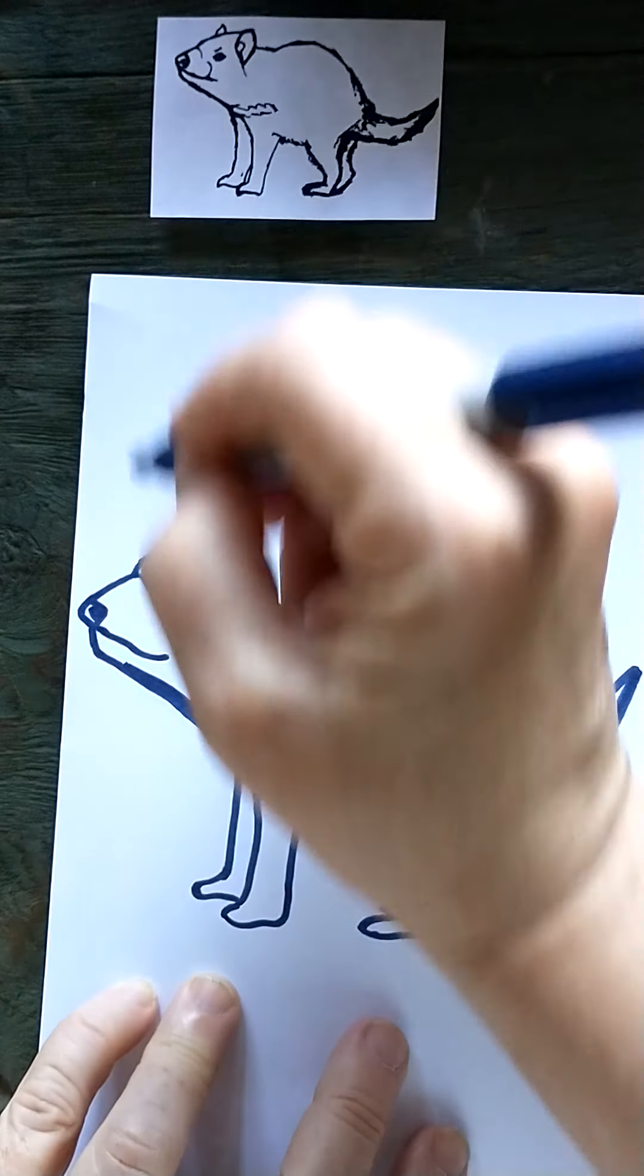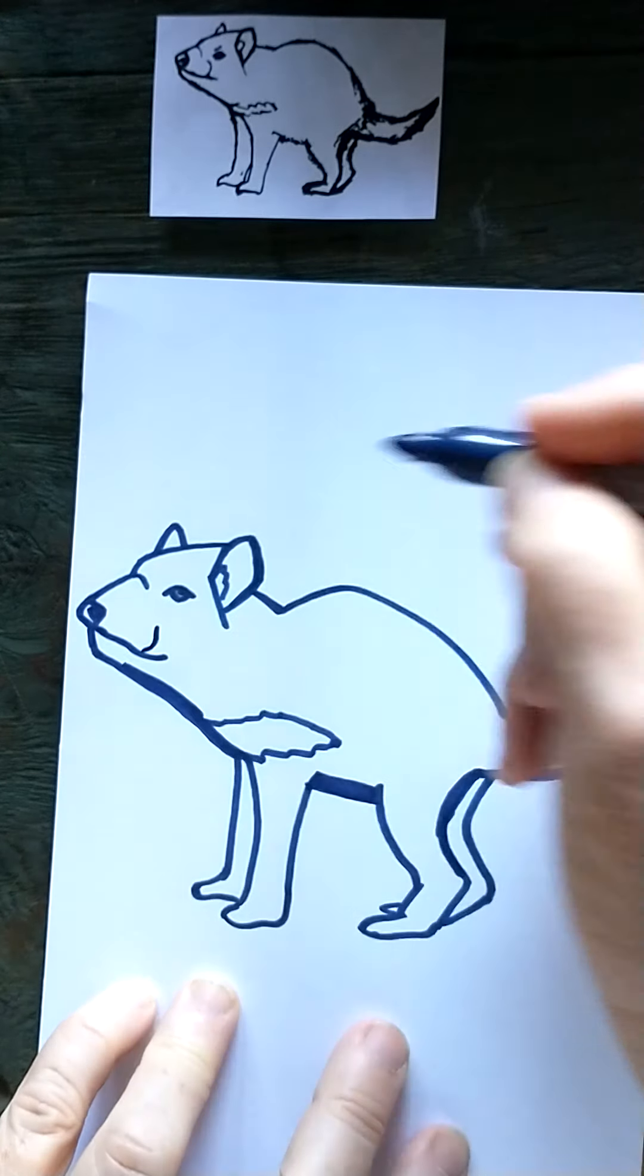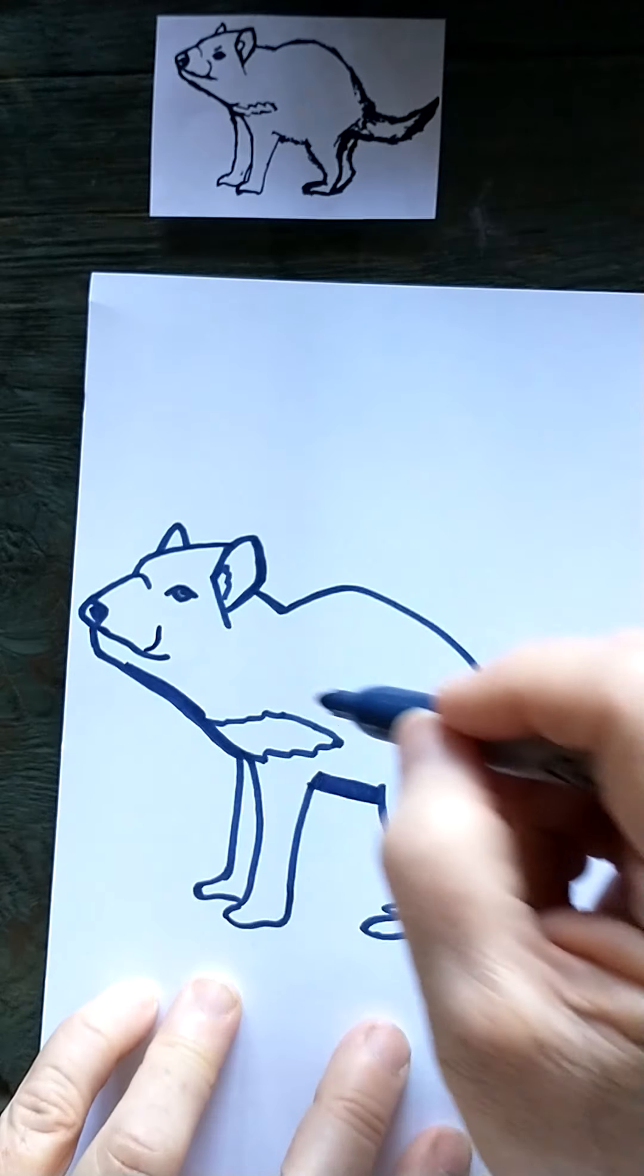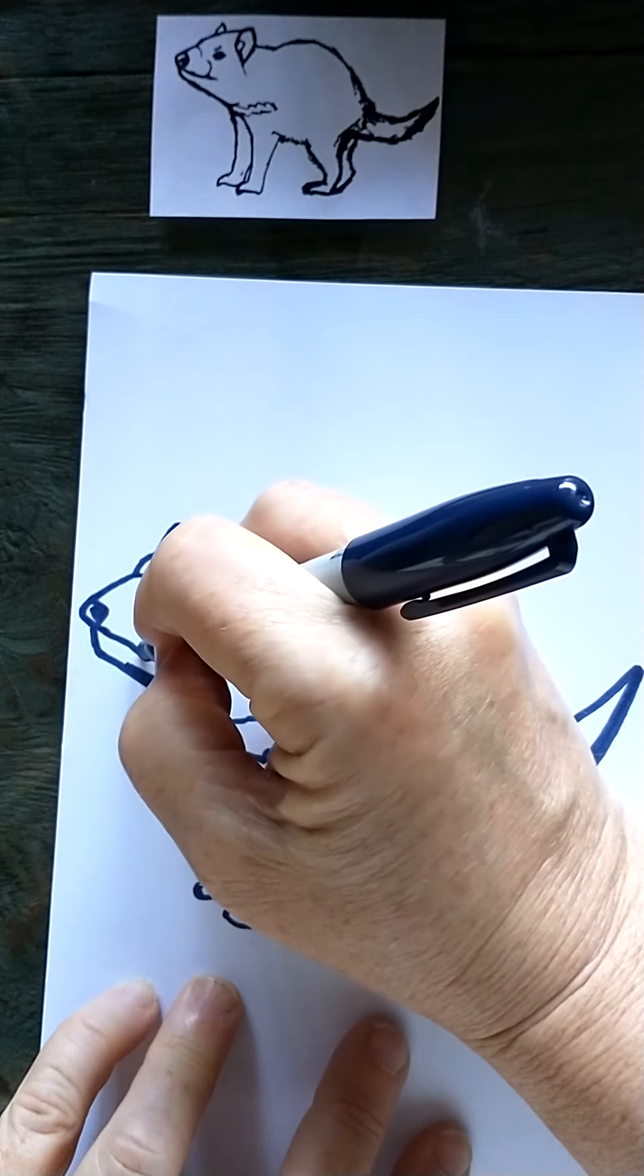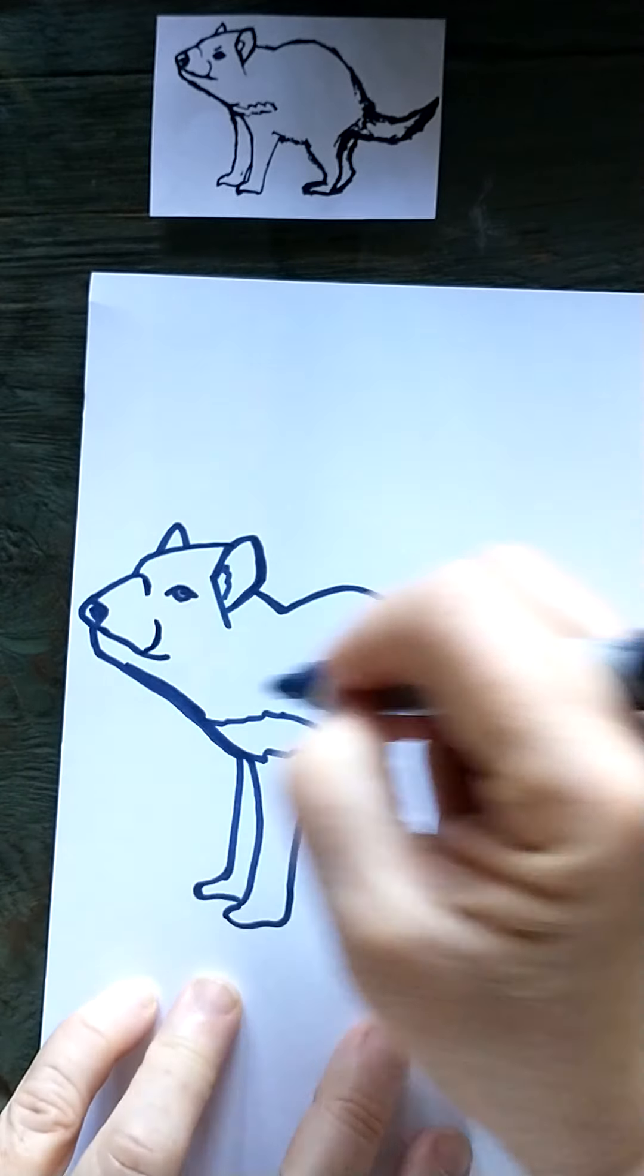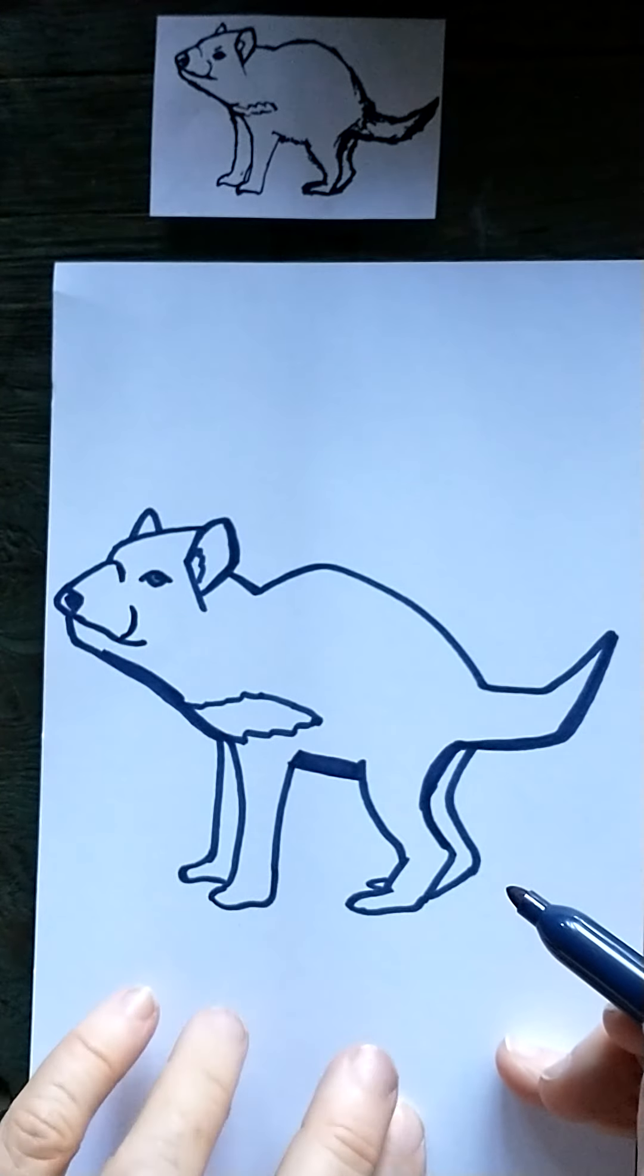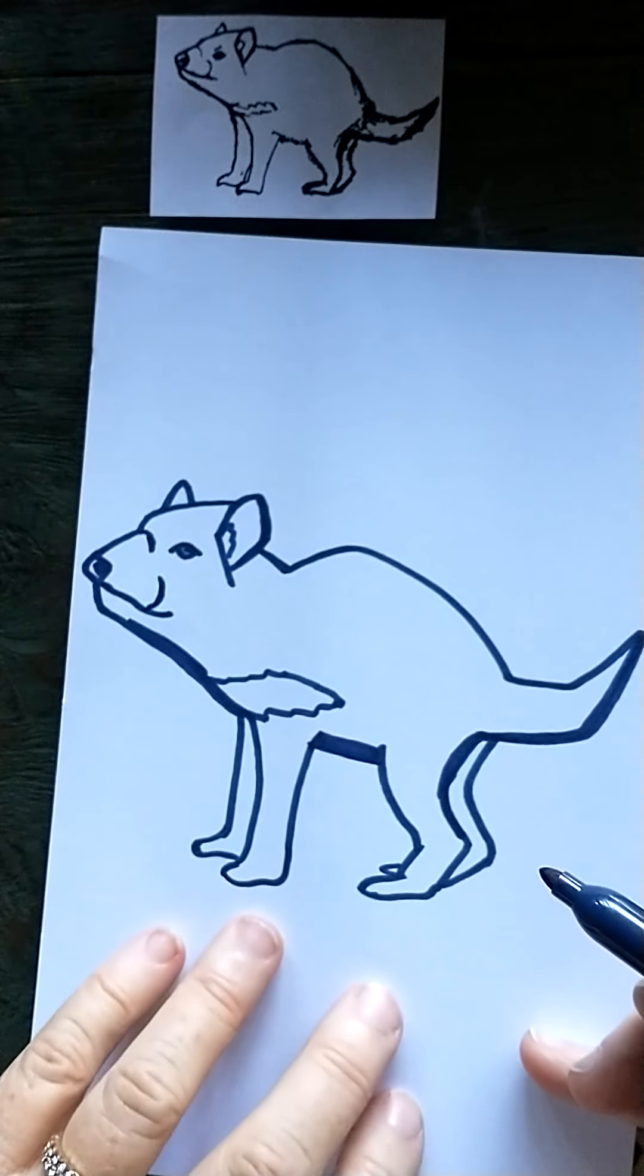And there we go. This little line here was more of a coloration in the fur, not so much, wasn't actually the line of the mouth. So that's kind of a change in the fur. So there is my Tasmanian devil.